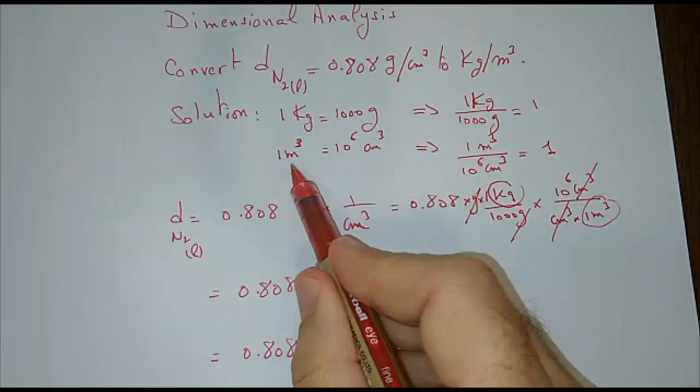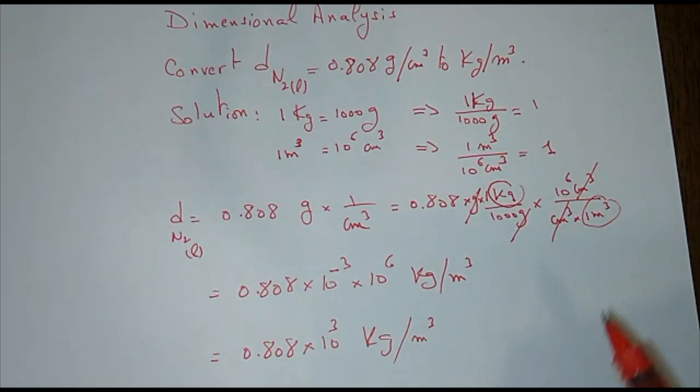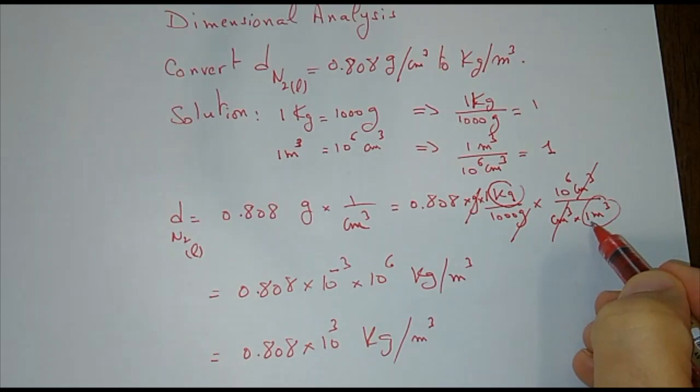So 1 meter cubed divided by 1 million centimeter cubed equals 1. So this 1 over centimeter cubed, I just multiply it by 1. Instead of 1, I put 1 meter cubed over 10⁶ centimeter cubed.